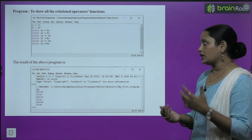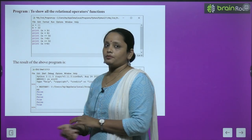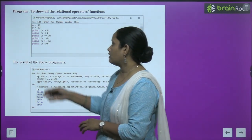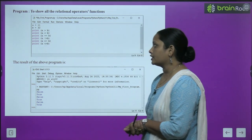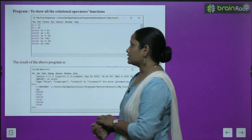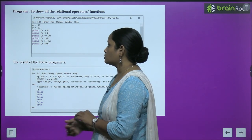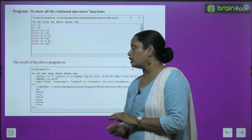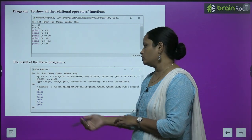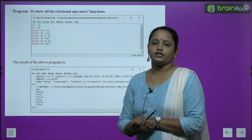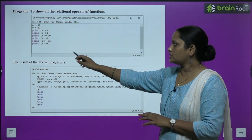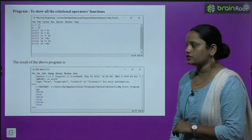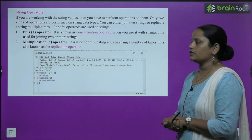Yahan pe in saare operators ko ek example mein laga ke dikhha hai. With a is 11 and b is 32: a is greater than b gives false, a is smaller than b gives true, a equal to b gives false, a is not equal to b gives true, a is greater than or equal to b gives false, and a is less than or equal to b gives true. Whatever we print here, the result is shown in front of us as it would appear in Python.